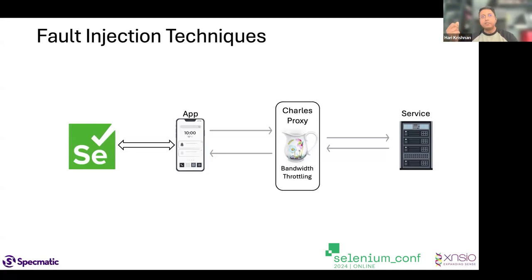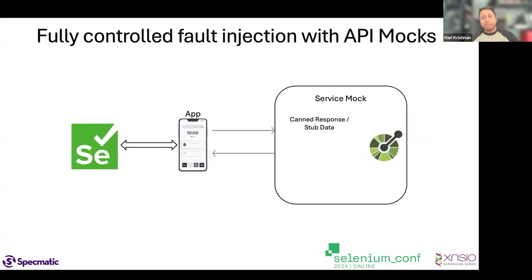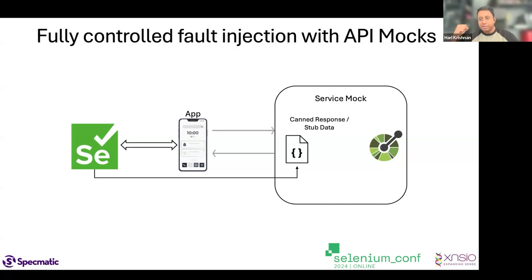The one difficulty we faced with these approaches is that they are not programmatically easy to set up within a Selenium test. I can do this a little bit manually, but if I want to put up an automation suite and have it repeatable all the time, that was getting very difficult. That's when we realized mocks are a lot easier to set up and run with, instead of having a network proxy. With Charles Proxy I still have to have the real service available — my dependency is still not isolated.